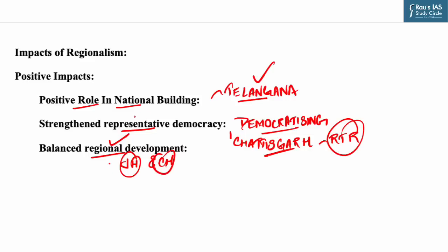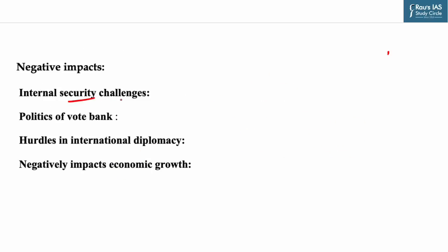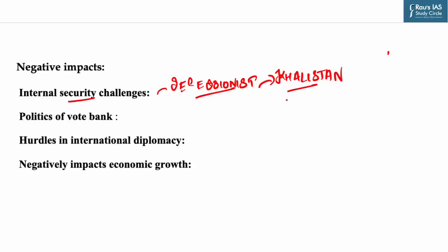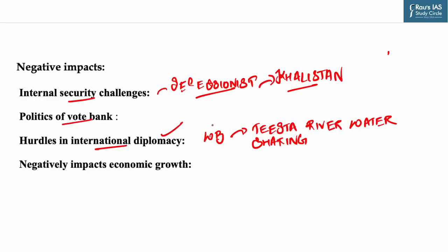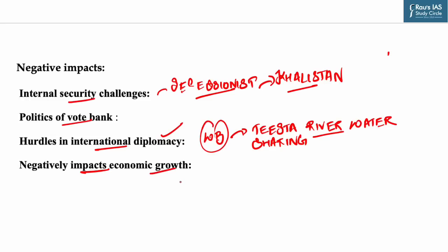Now let's see important negative impacts. First is internal security challenges — the secessionist form of regionalism like the Khalistan movement is a serious threat to development, progress, and unity of the nation. Next is politics of vote banks based on language and culture, which is against healthy democratic procedures. Next, regionalism creates hurdles in international diplomacy — for example, West Bengal opposed the Teesta river water sharing treaty with Bangladesh. Finally, regionalism negatively impacts economic growth — regionalism-induced violence disturbs society, schools, colleges, tourism, and the government needs to deploy extra forces to control situations.